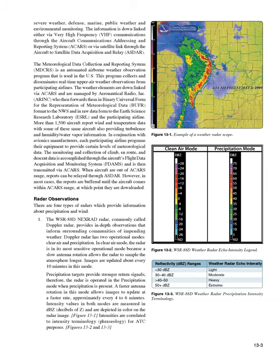Areas of IFR conditions — ceilings less than 1,000 feet and visibility less than 3 miles — are shown by a hatched area outlined by a smooth line. MVFR regions — ceilings 1,000 to 3,000 feet, visibility 3 to 5 miles — are shown by a non-hatched area outlined by a smooth line. Areas of VFR — no ceiling or ceiling greater than 3,000 feet and visibility greater than 5 miles — are not outlined. Also plotted are fronts, troughs, and squall lines from the previous hour's surface analysis chart. Weather depiction charts show a modified station model providing sky conditions, ceiling height, weather, and obstructions to visibility, but do not include winds or pressure readings. A bracket symbol to the right of the station indicates an automated station observation.